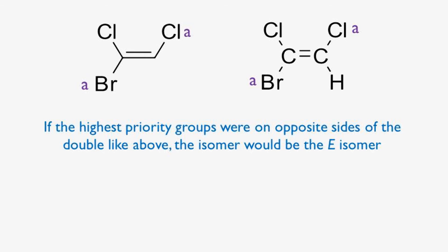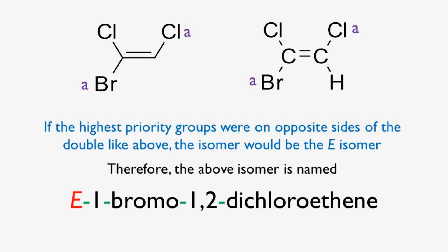If the highest priority groups were on opposite sides of the double bond, the isomer would be the E isomer, and it would be named E-1-bromo-1,2-dichloroethene.